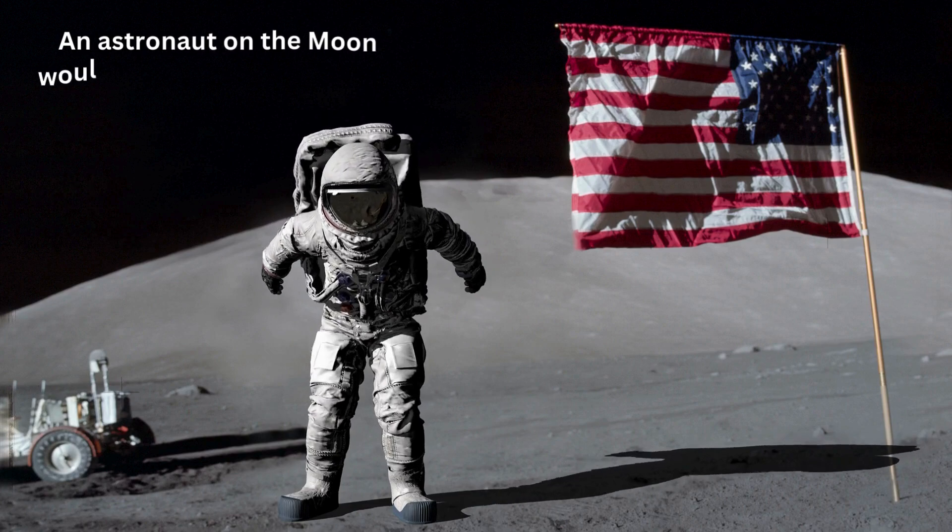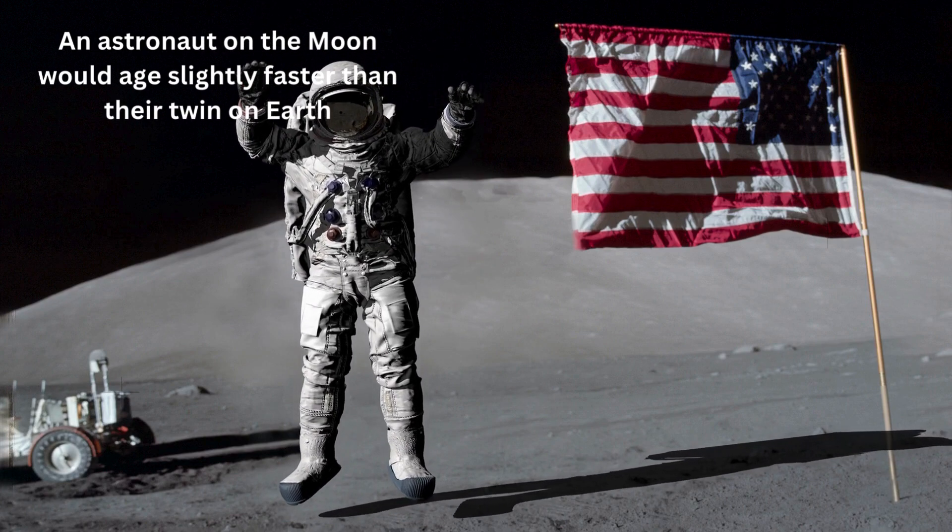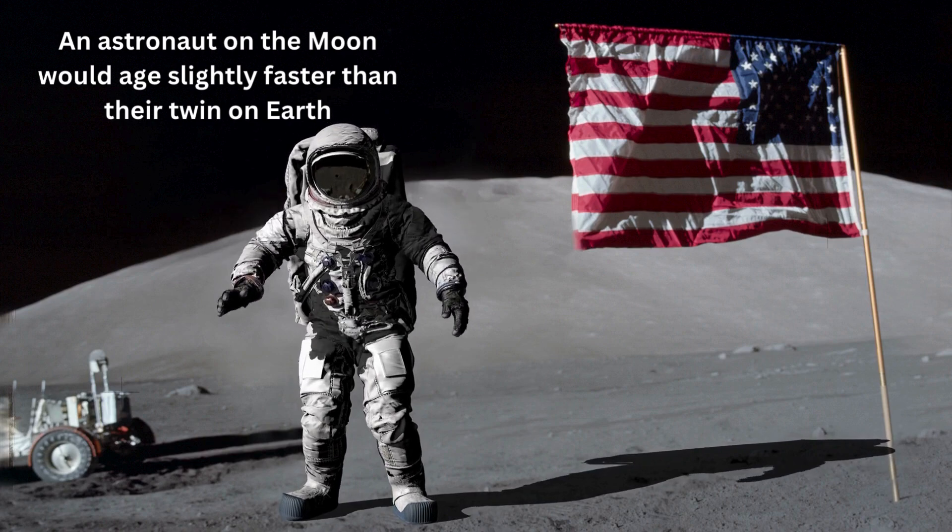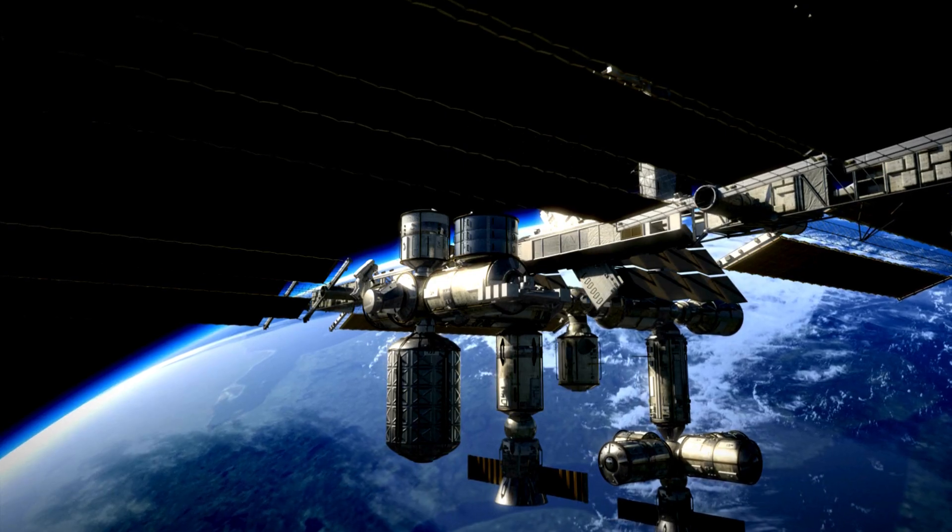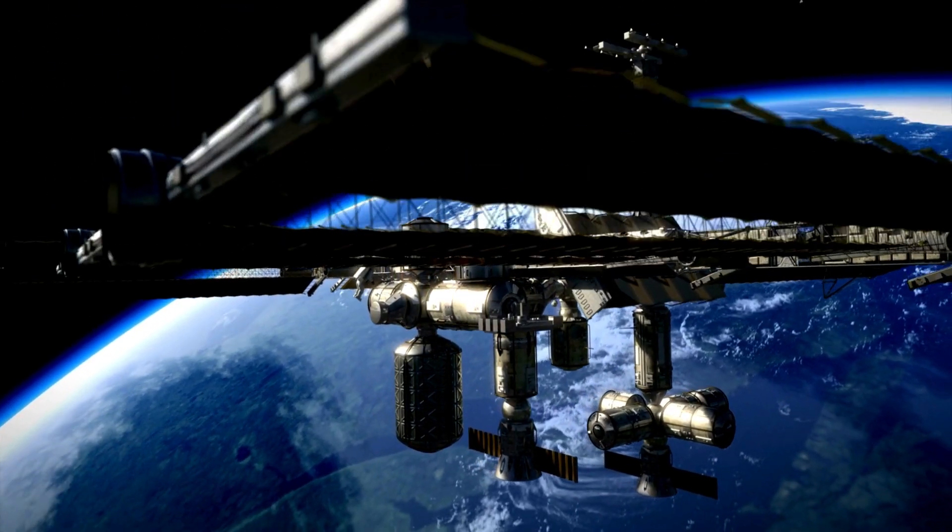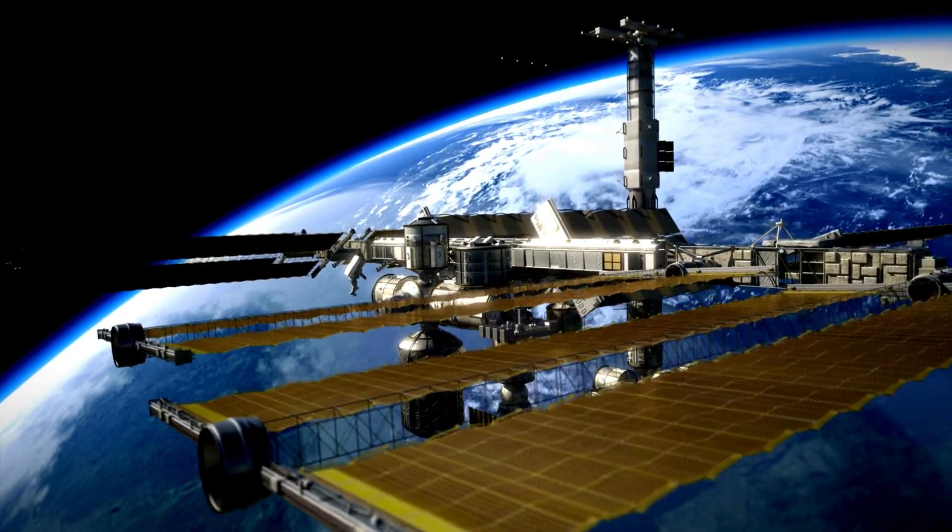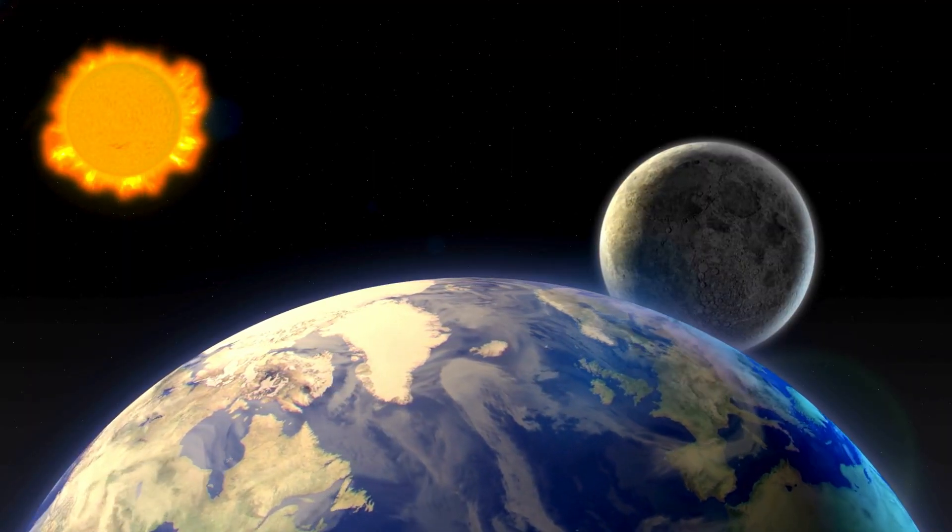Over the course of 50 years, an astronaut on the moon would be around a second older than if they had stayed on Earth. In reality, both gravity and speed affect time dilation. For objects moving at high speeds, like astronauts on the ISS, the effects of both gravity and speed can be significant. However, for the moon and sun, the effect of gravity is much more pronounced.